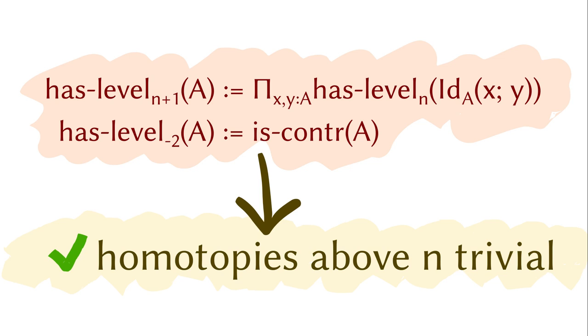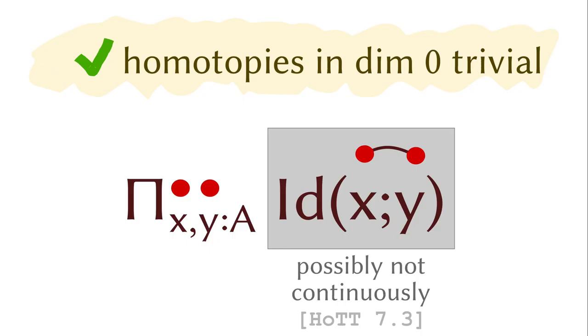The rest of this lecture is to see why it is also a necessary condition. Let's first check what it means by having no interesting homotopies in dimension zero.